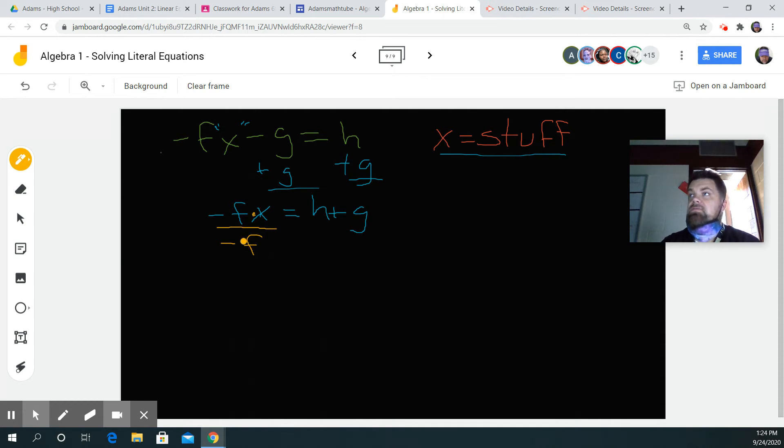Divide by negative f. Why? Because it's the opposite of multiplying. Whatever I do on one side, I got to do on the other.